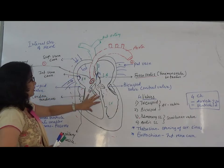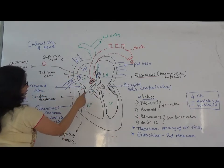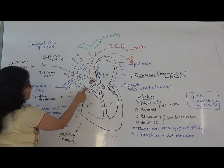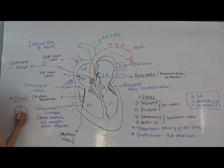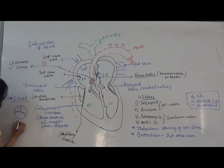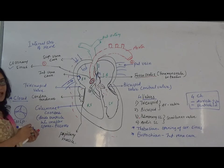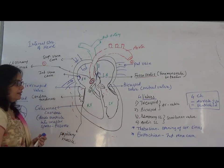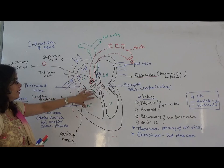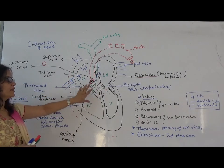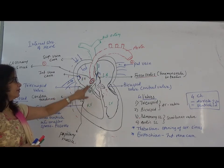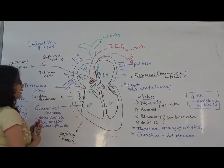From the right auricle, deoxygenated blood passes into the right ventricle through the tricuspid valve. It is called the tricuspid valve because it has three cusps. This valve is also called an atrioventricular (AV) valve because it is situated between the auricle and ventricle — specifically between the right auricle and right ventricle.